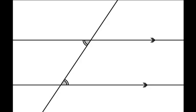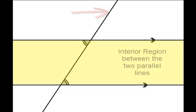As you can see here, we have two lines that are parallel as well as a transversal. Alternate interior angles will be angles that occur on opposite sides of the transversal, but both on the interior region between the two lines.